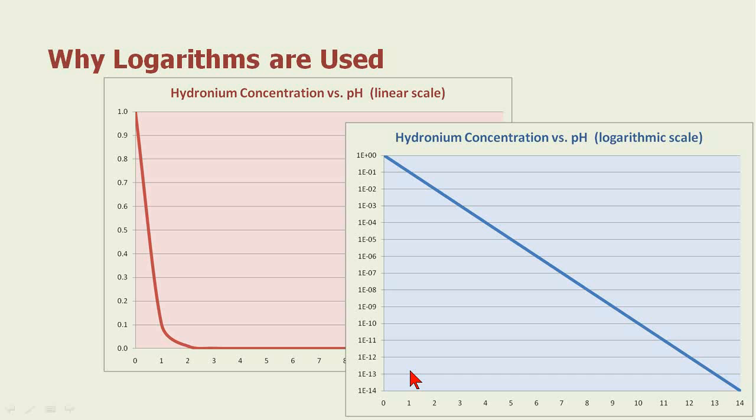Why are logarithms used? Well, it was simpler to use a logarithmic scale versus a linear scale. If you look at the hydronium concentration versus pH on a linear scale here in red, down in this area the concentrations become very small and this becomes a flat line.